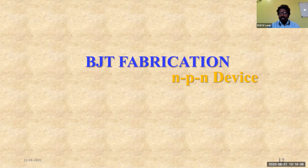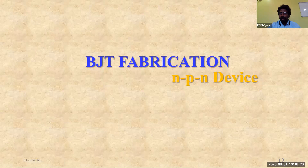Field effect transistors are unipolar transistors since their operation depends primarily on only a single carrier type. That's a major difference between the BJT and the FETs — the BJT mainly depends upon the operation of two poles, that is two carrier types, whereas the FET depends upon only unipolar or single carrier type.